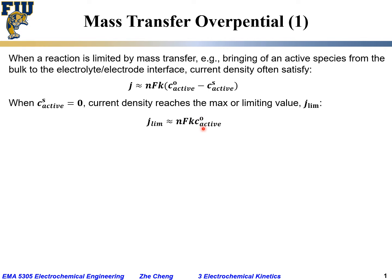If we take the ratio j/j_lim, the nFk terms cancel on the right side. We get j/j_lim = 1 - Cs/C₀. This relationship connects the actual current density to the limiting current density. The current may increase but cannot exceed this limiting value because the electrochemical reaction is limited by mass transport — how much current passes is limited by how fast the active species can be brought from bulk to the electrode surface.